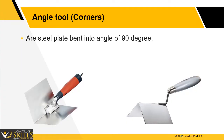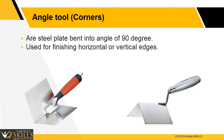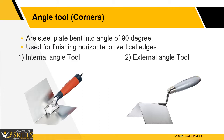Angle tool, also known as corners: these are steel plates bent into a 90-degree angle. They are used for finishing and ensuring horizontal or vertical edges are at right angles. There are two types: internal angle tool and external angle tool.